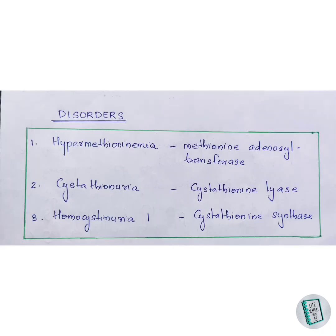Now let us look at some disorders caused by enzyme deficiencies in methionine degradation. First is hypermethionemia, caused by deficiency of methionine adenosyl transferase. Second is cystathionuria, caused by deficiency of cystathionine lyase. Third is homocystinuria, caused by deficiency of cystathionine synthase.